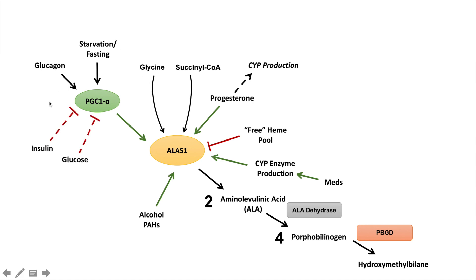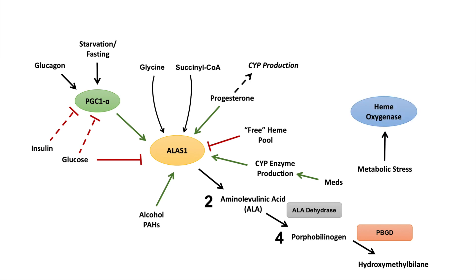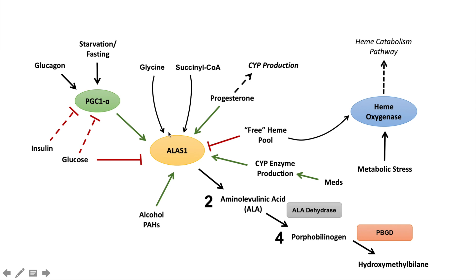Insulin and glucose both inhibit PGC-1-alpha, which means they inhibit ALAS-1, and glucose itself also seems to directly inhibit ALAS-1. Metabolic stress can activate heme oxygenase, increasing heme catabolism, which siphons heme away from the free heme pool, leading to activation of ALAS-1 as well. The activators of ALAS-1 are the triggers that cause neurovisceral attacks, while the inhibitors are what can prevent an attack - these are very important to understand.